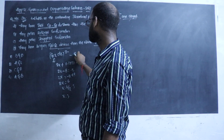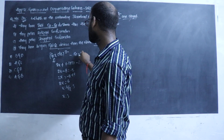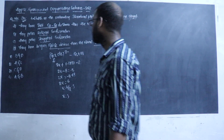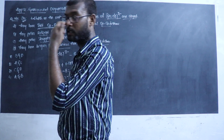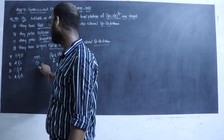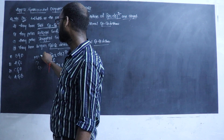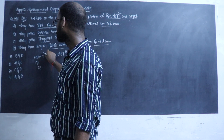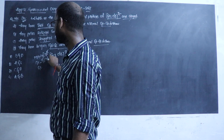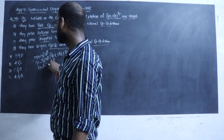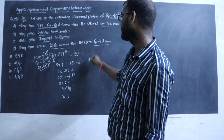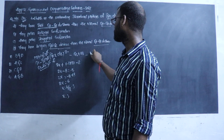So then, uranium is in what oxidation state? Uranium is in the plus 3 oxidation state. Uranium has a plus 3 oxidation state. He had uranium in plus 3 oxidation state.